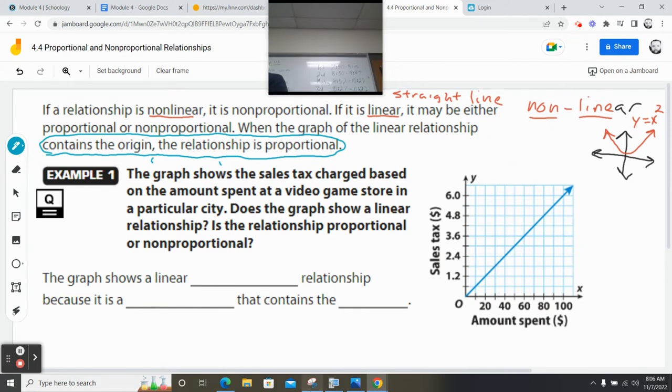So let's get into this. The graph shows the sales tax charged based on the amount spent at a video game store in a particular city. Does the graph show a linear relationship? Well, what did I circle in blue? So does this go through the origin? By the way, do you guys know what the origin is? What is the point of the origin?